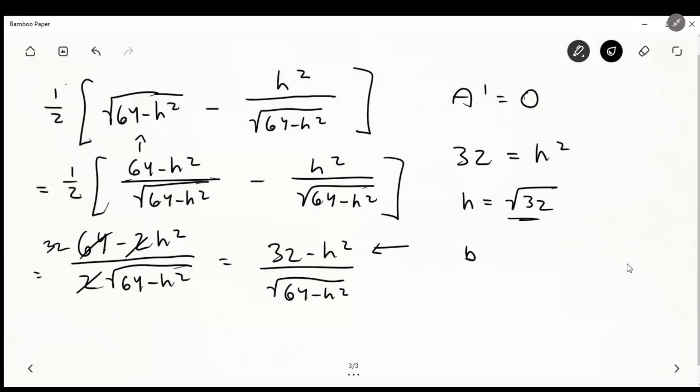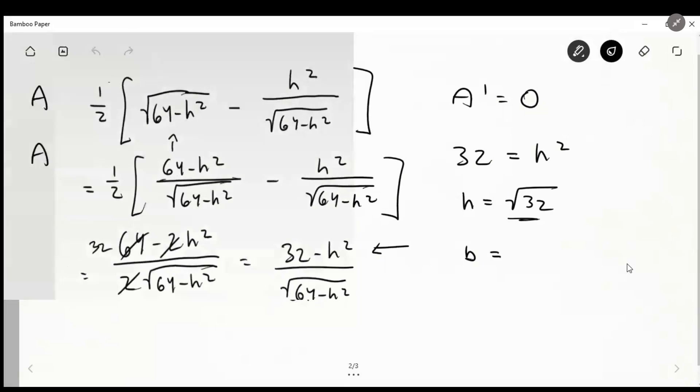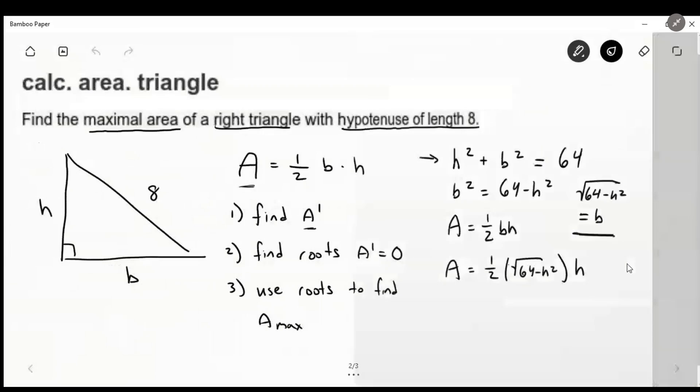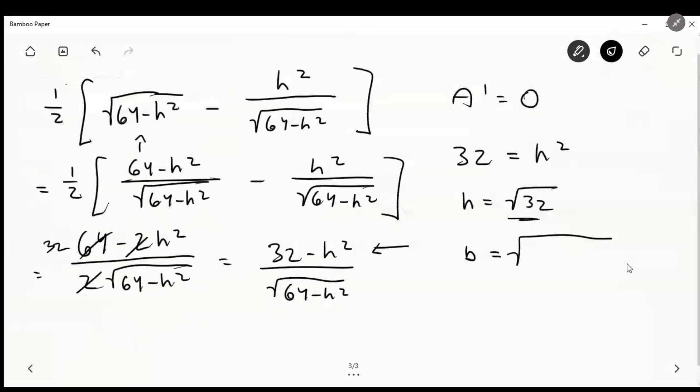And if you recall, b, which we solved for back here, two pages ago. b, we said is radical 64 minus h squared. So radical 64 minus h squared, or radical 64 minus 32, or just radical 32.